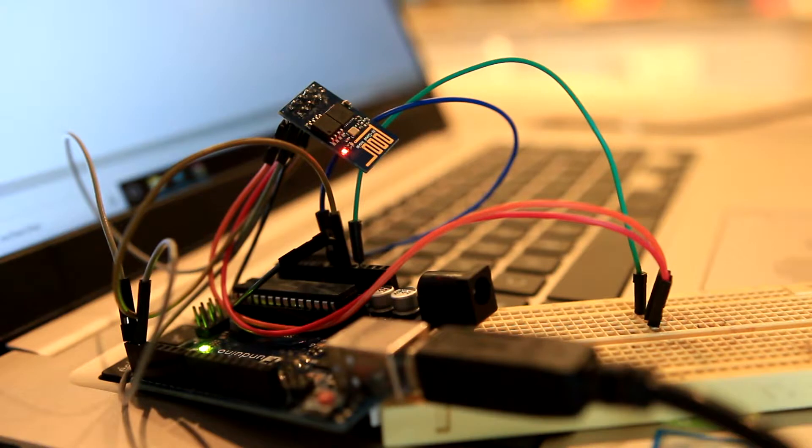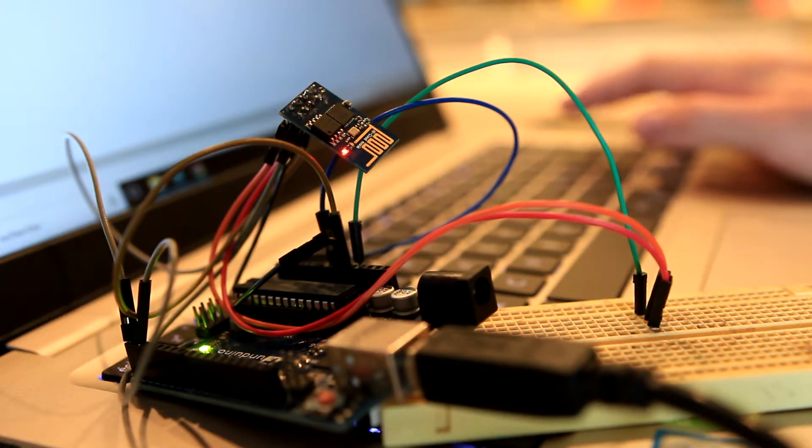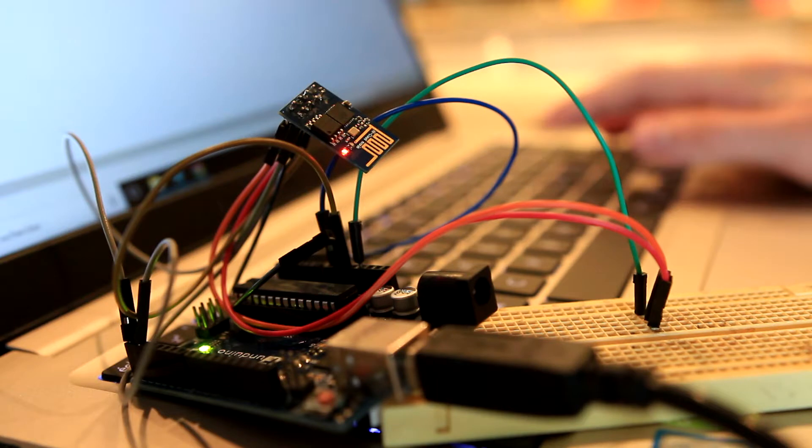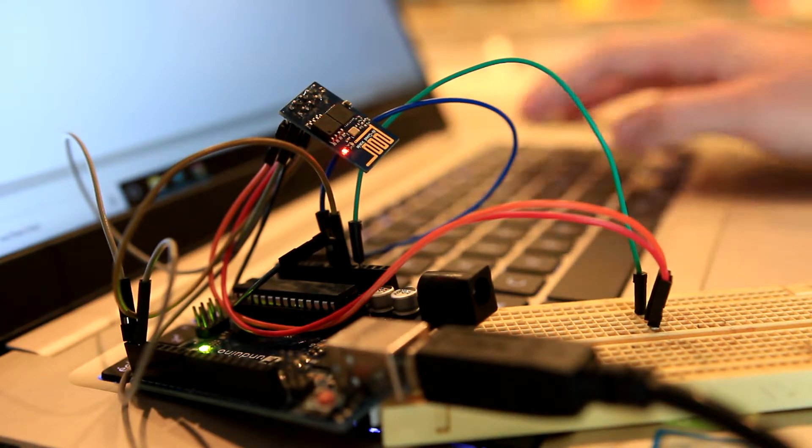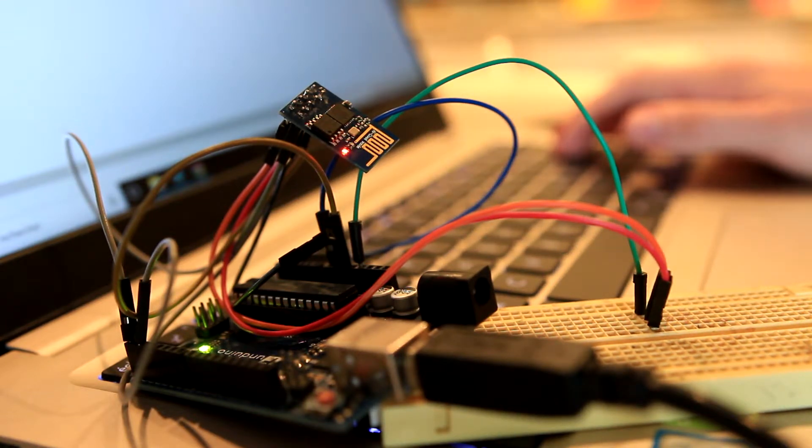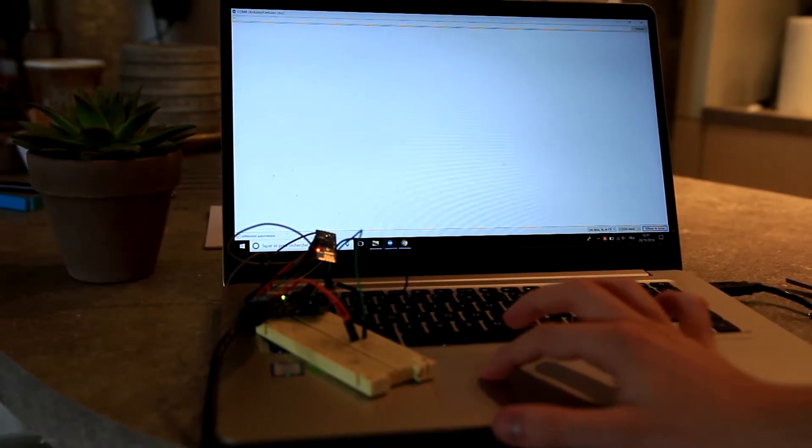Instead of using the default firmware of the ESP, which is the wifi module, I uploaded my own code using the Arduino IDE. You can find a lot of tutorials on the internet about how to do that. I just want to say that the Arduino that you see here on the picture was just used as an FTDI and has nothing to do with the ESP.